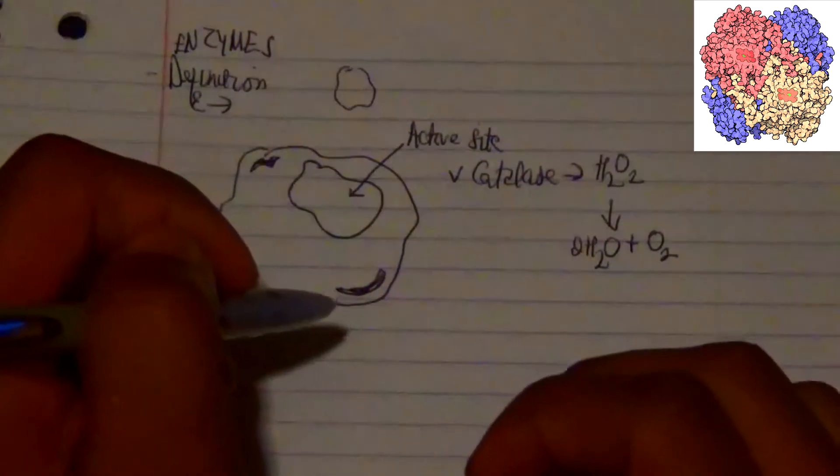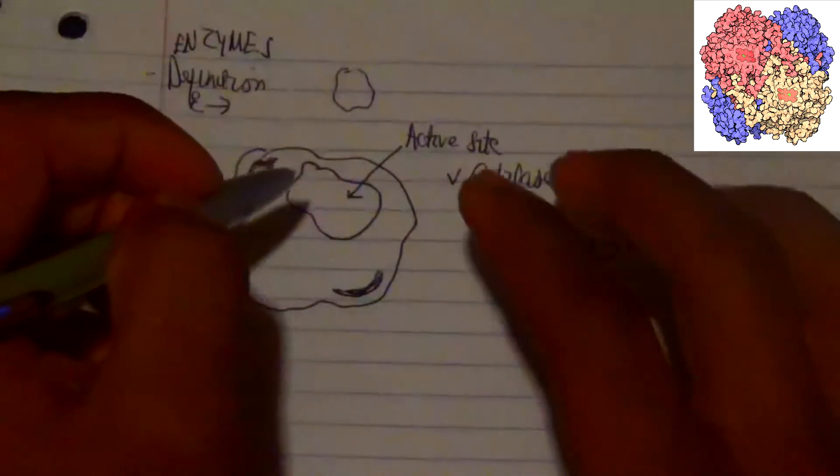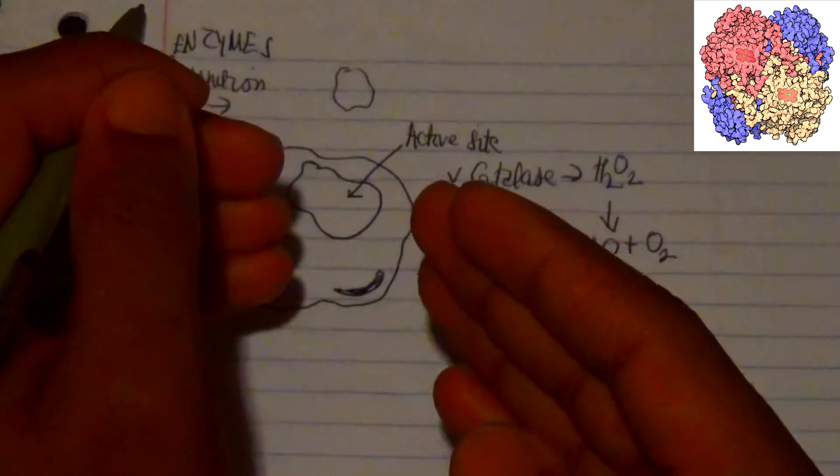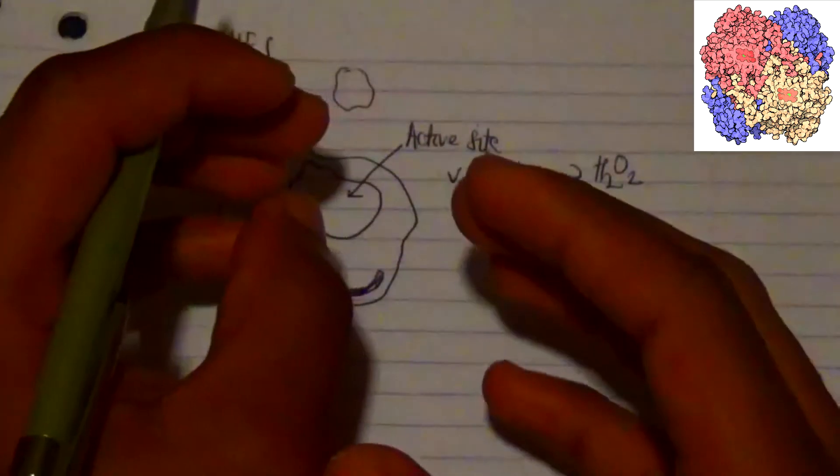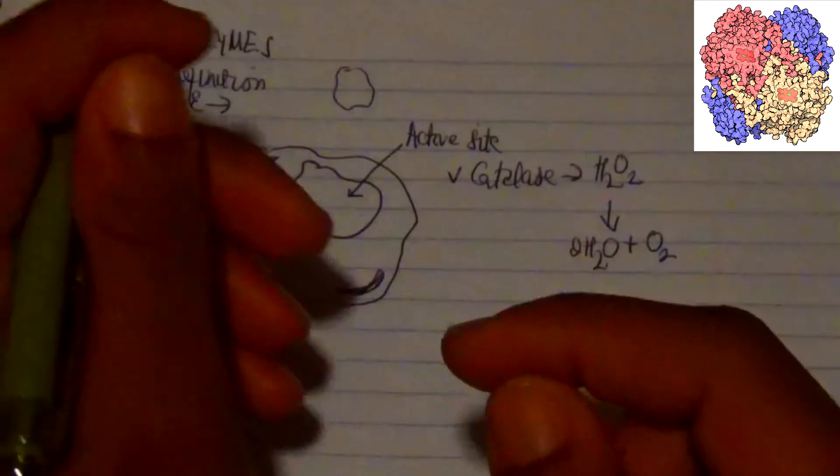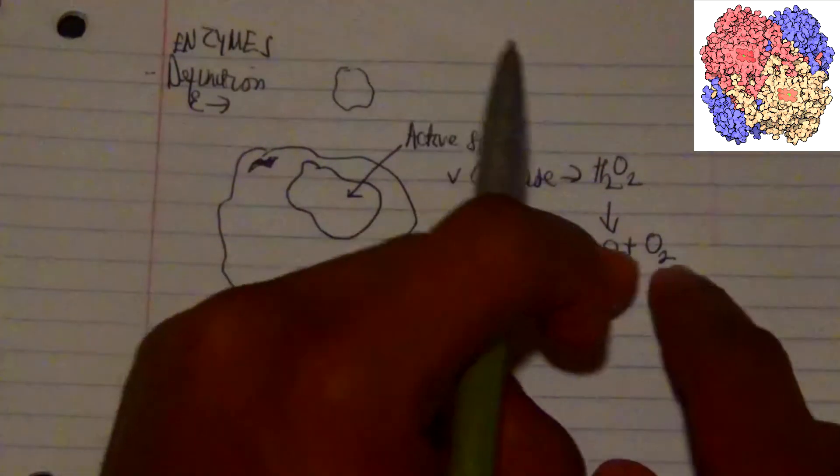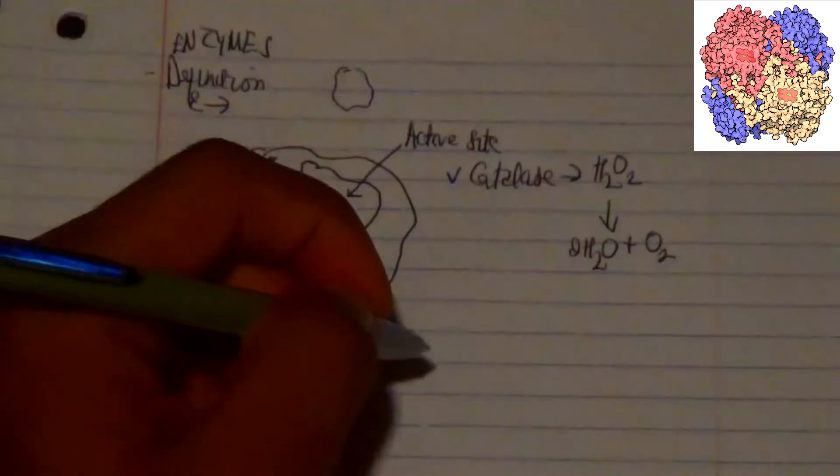It binds this particular substrate to the active site, and then the active site actually exhibits or transforms itself into a specific transition state of this particular reaction, where the transition state is actually where the catalysis occurs. That leads to the splitting of hydrogen peroxide into water and oxygen. That is all about what catalysis does.